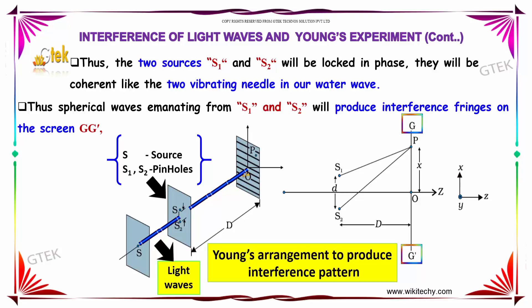Thus, spherical waves emanating from S1 and S2 will produce the interference fringes on the screen G and G'.